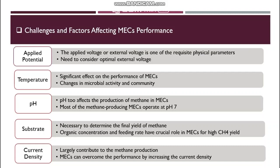There are some challenges and factors that may affect the performance of microbial electrolysis cells: applied potential, temperature, pH, substrate, and so on. Applied voltage is one of the requisite physical parameters for manufacturing methane; adjustment in applied voltage significantly influences the growth and distribution of electroactive bacteria and further impacts methane generation. Thus, there is a need to consider an optimal external voltage specific for various substrates. Temperature also has a significant effect; varying temperature brings about changes in microbial activity and community, and most electromethanogenesis studies have been carried out under ambient or mesophilic conditions.